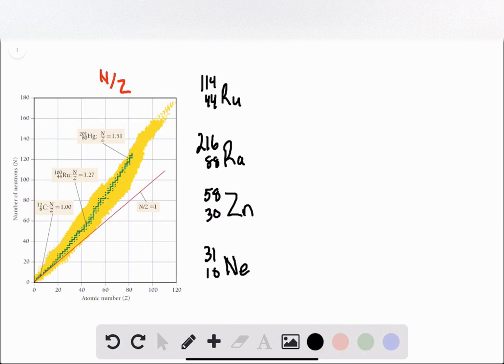So for each of the four species listed, we're just going to take a quick look at the graph to see where they fall and then decide which type of decay is most likely to happen for that species.